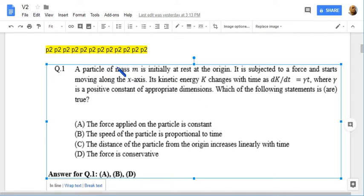A particle of mass m is initially at rest at the origin. It is subject to a force and starts moving. Kinetic energy K varies as this, where gamma is positive. Which of the following statements are true?